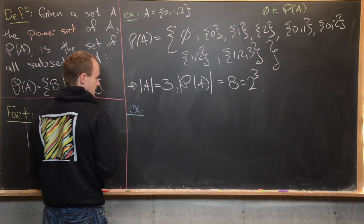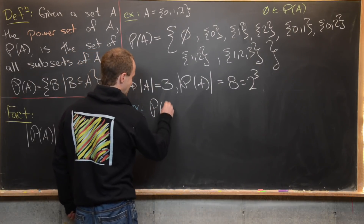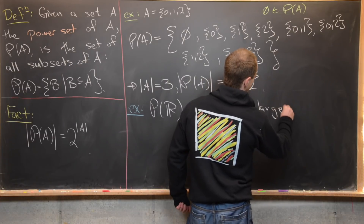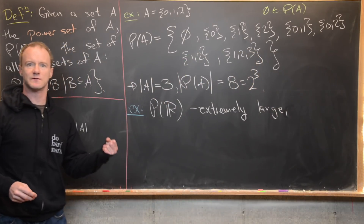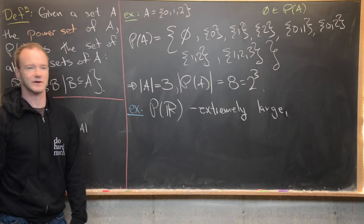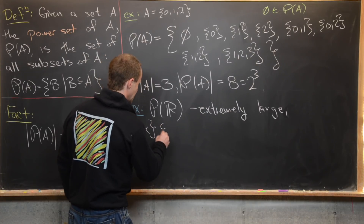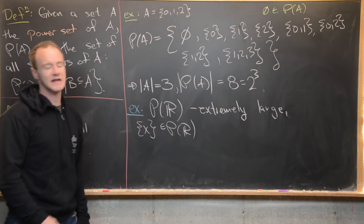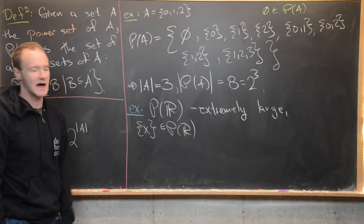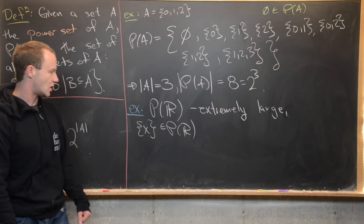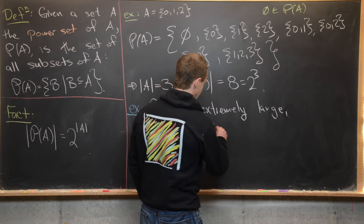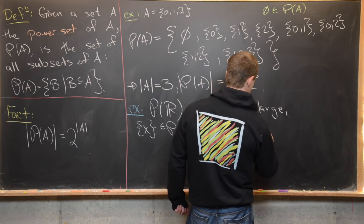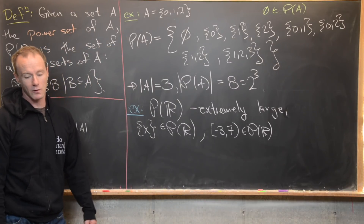Let's look at another example: the power set of the real numbers. This is extremely large — the real numbers themselves are a pretty large set, so we're looking at all subsets of real numbers. Notice that any singleton is going to be an element of the power set of ℝ, so in some sense you can embed ℝ into the power set via the singleton map. Any open or closed interval, like [-3, 7), is also a subset of ℝ, hence an element of P(ℝ).